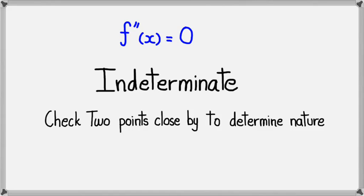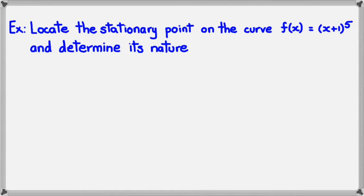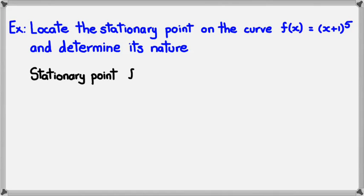In the next slide, I'm going to do an example where you can see how this applies. Here's the example: locate the stationary point on the curve f(x) = (x + 1)⁵ and determine its nature. The first rule of thumb is that a stationary point happens when f'(x) = 0.